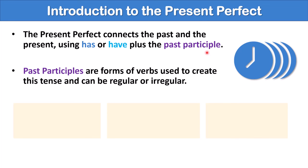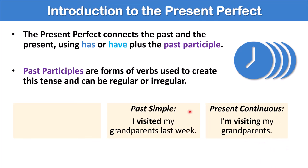First, I want to compare three different sentences in different verb tenses. Let's look at this sentence in the present continuous. I'm visiting my grandparents. In the present continuous, this is happening right now. Now, look at this sentence in the past simple. I visited my grandparents last week. This is in the past, a specific point in the past.